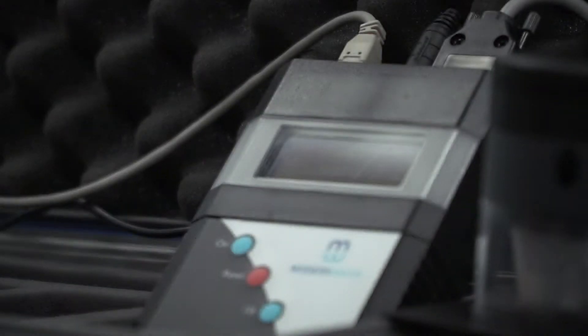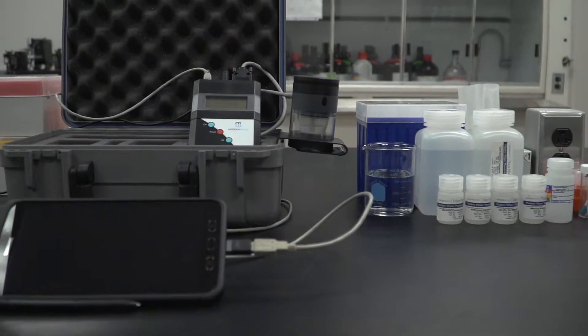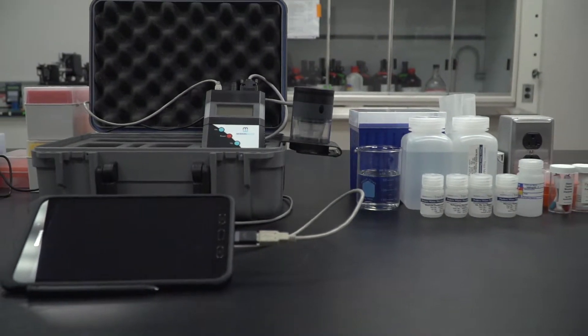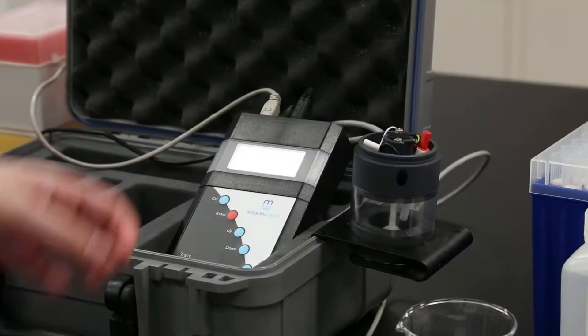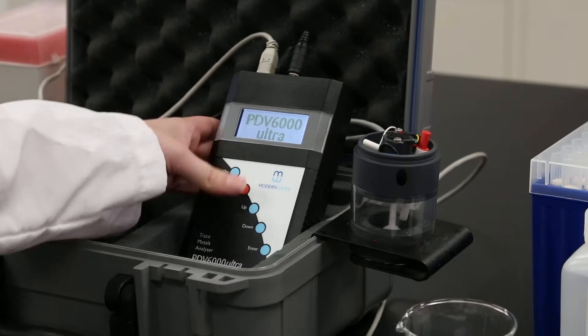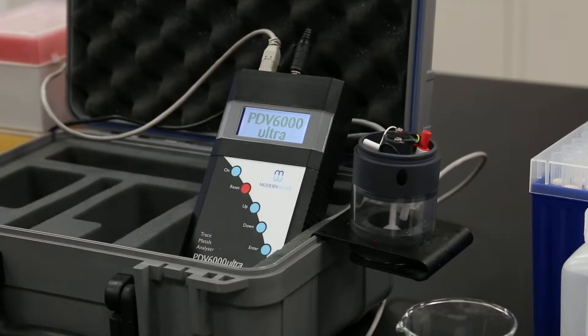The Microtrace PDV can be used with a tablet for on-site analysis or with a desktop computer for laboratory analysis. To begin using the device with the tablet software, turn on the PDV handset by pressing the on button.